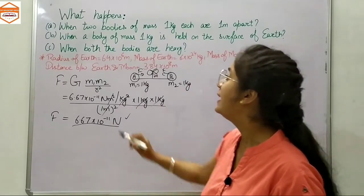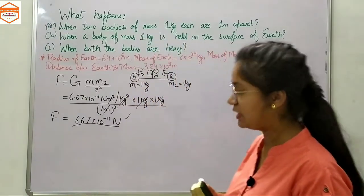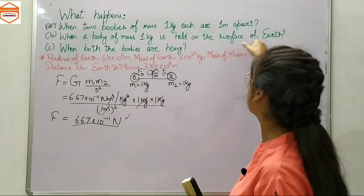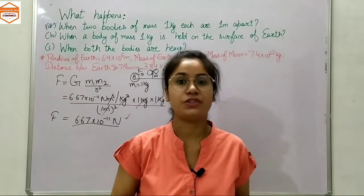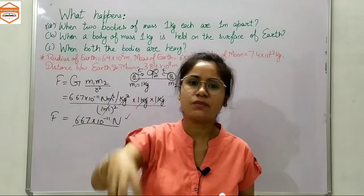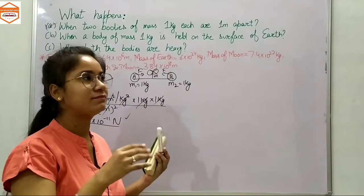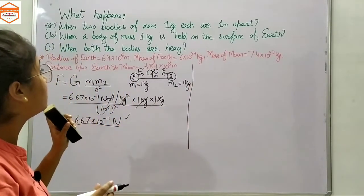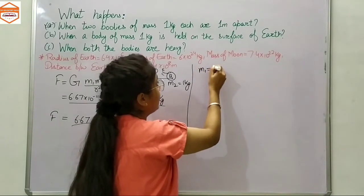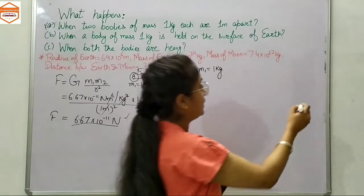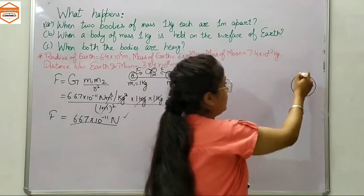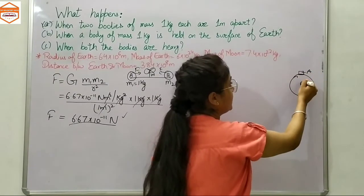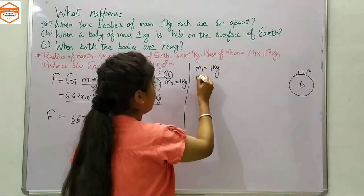Now the second part asks: what happens when a body of mass 1 kilogram is held on the surface of Earth? With this question you can also answer why a dropped object falls. The body of mass 1 kilogram is M₁. It is present on the surface of Earth, which is body B.